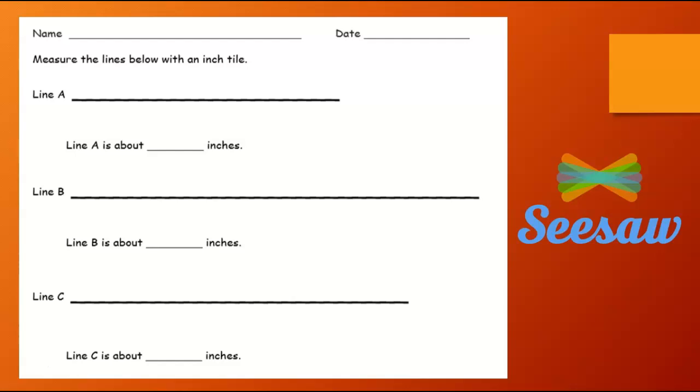Then, after you write the objective, I want you to write how many objects we measured in this video. So write the objective, and then the number of objects we measured in the video. Take a picture of that, the back of your paper, and seesaw that answer to me.